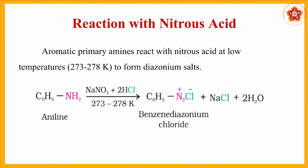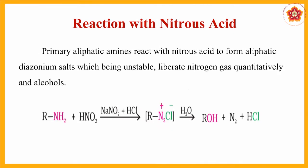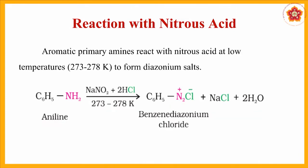The same reaction can be applied to aromatic primary amines. The key difference is that the benzene diazonium chloride formed as an intermediate is stable, unlike the aliphatic diazonium chloride which immediately converts to alcohol. This stable benzene diazonium chloride can undergo various further reactions, which will be discussed in part 8 of this chapter. This reaction also works only for primary amines because it requires the removal of two hydrogen atoms from the nitrogen.